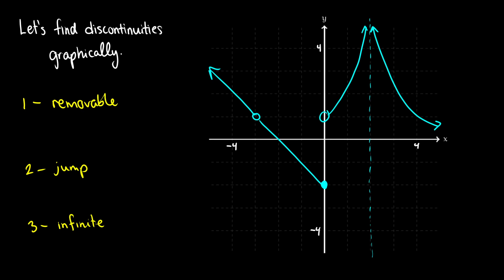The removable discontinuity is something that happens at, say, x equals negative three. It is a single point that is missing in a line — the limit exists, but the point is defined somewhere else. It's called removable because we can just redefine the point. If we have it defined somewhere else, we could just redefine the function to fill that point in. You could even think of it as a 'fillable' discontinuity.